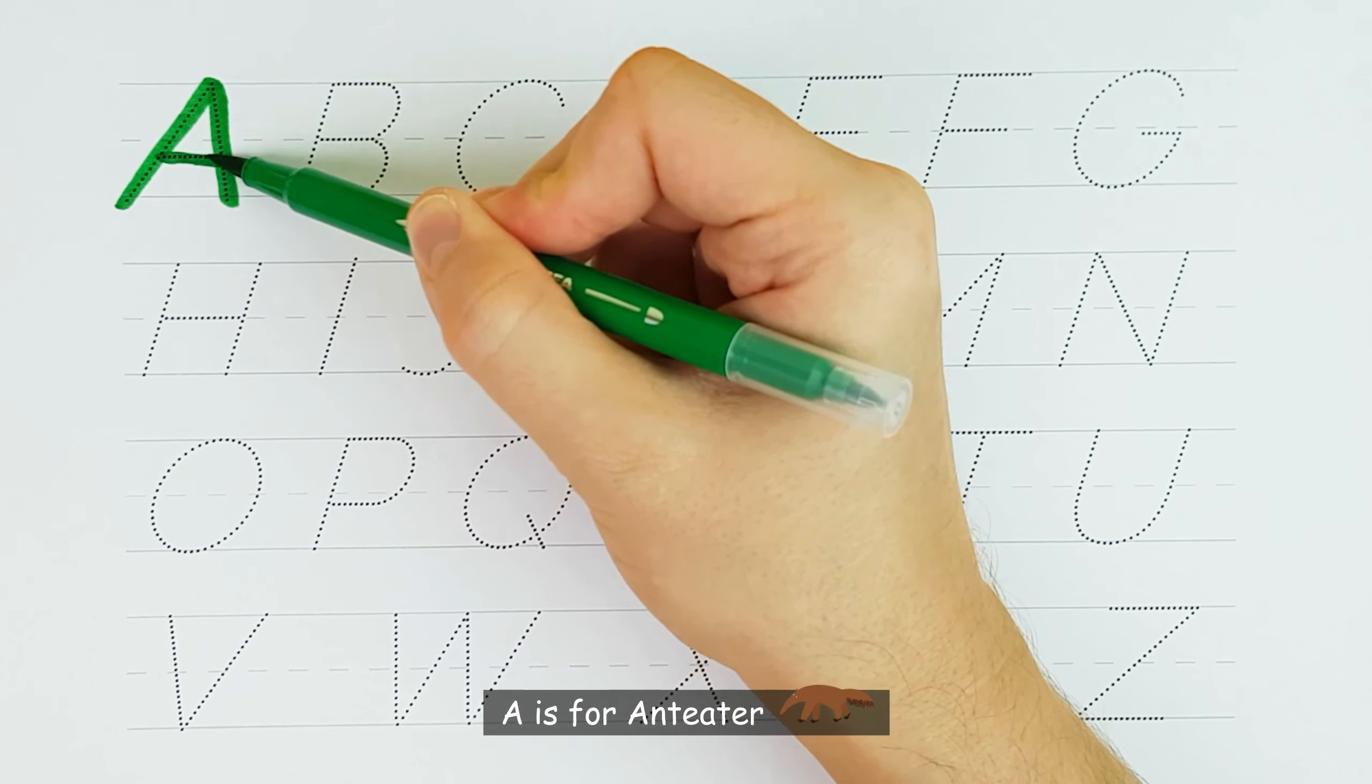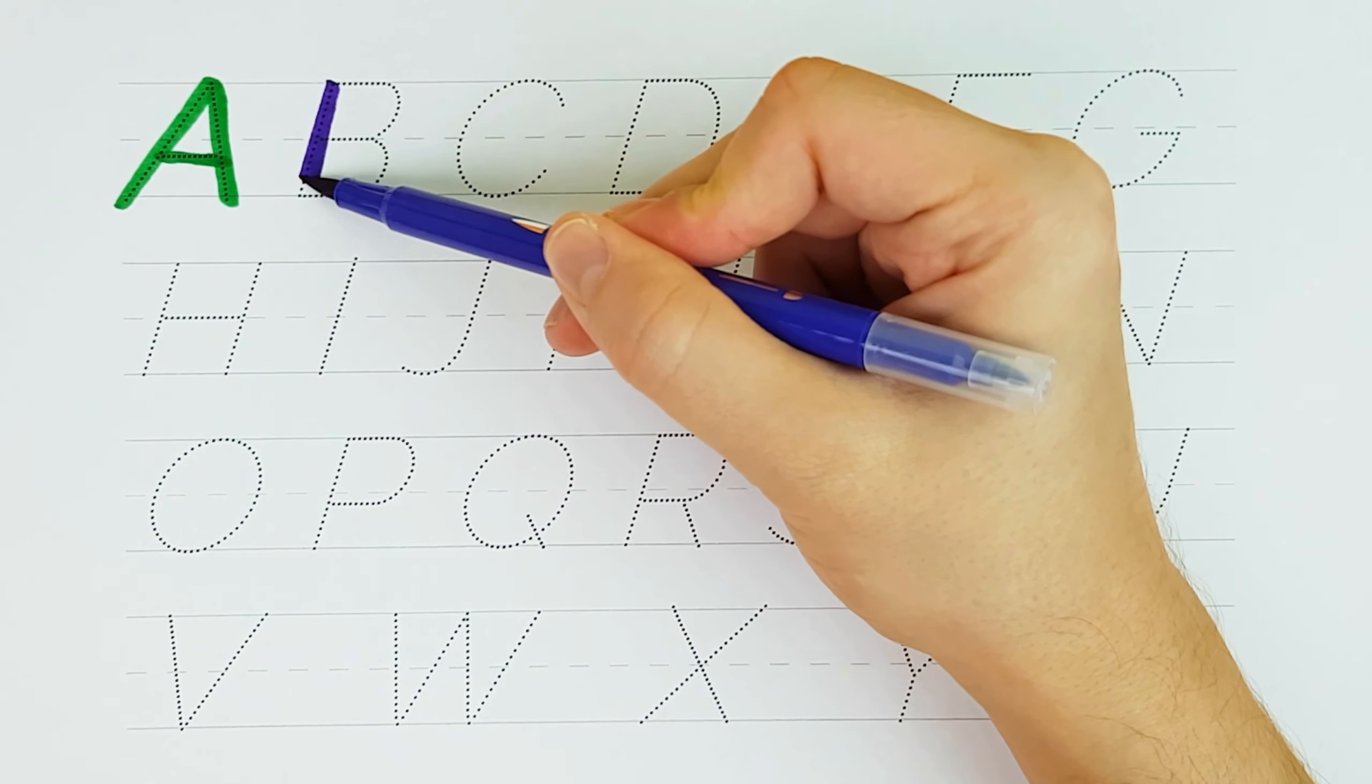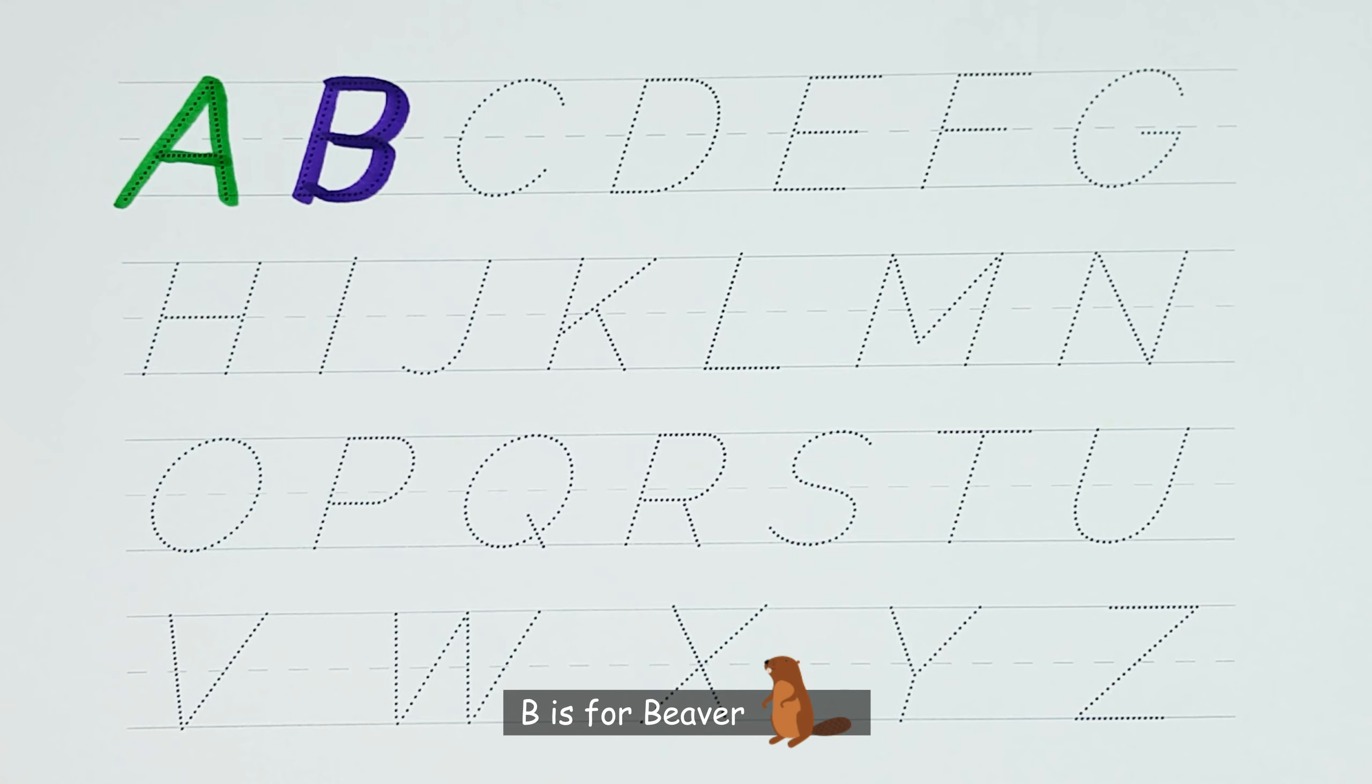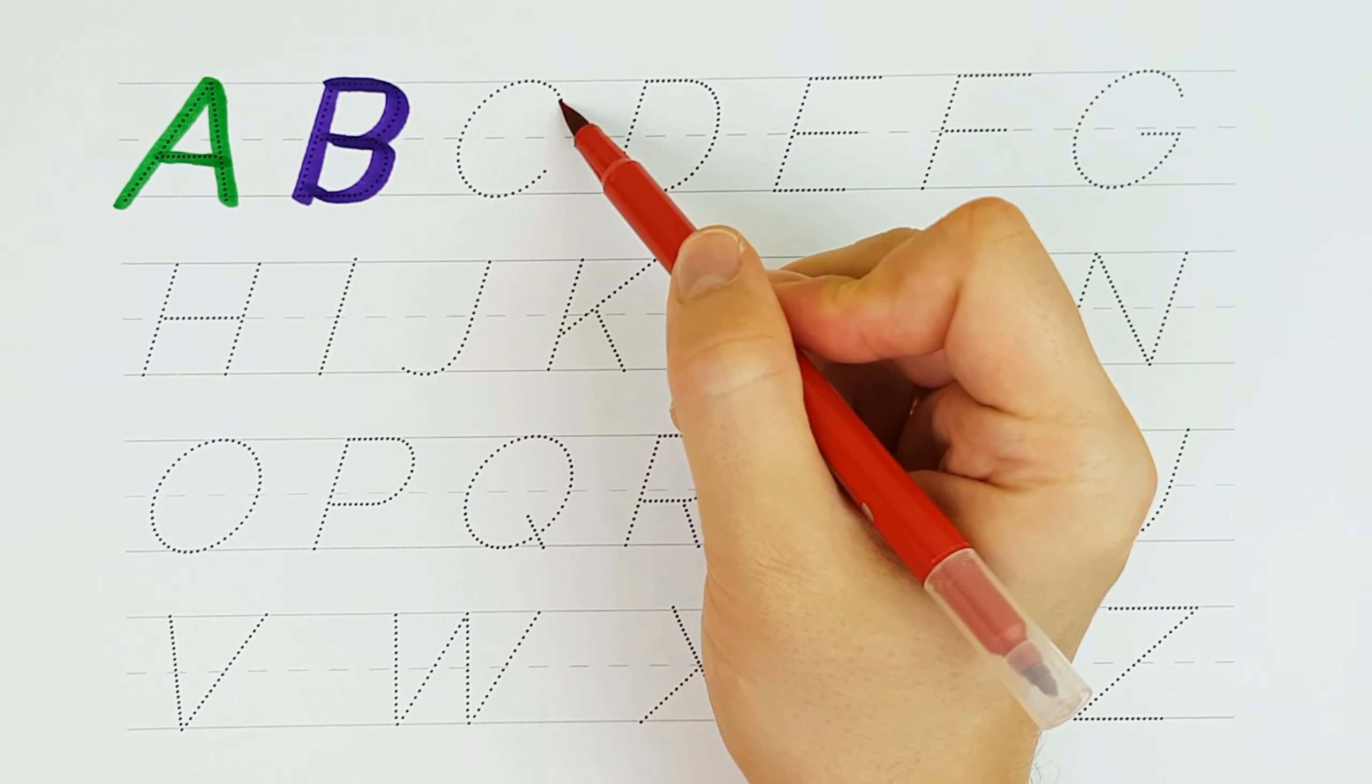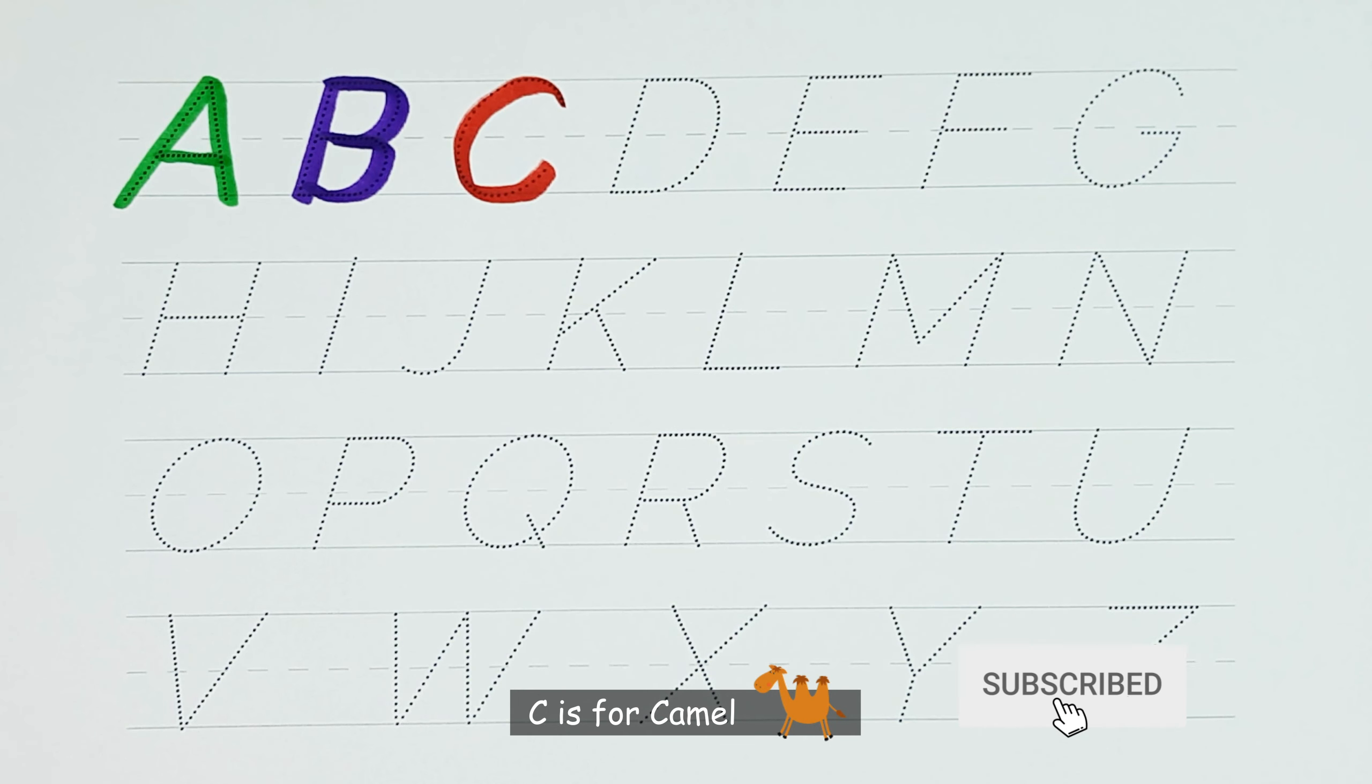A. A is for anteater. B. B is for beaver. C. C is for camel.